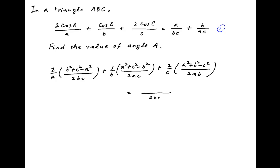On the right hand side, taking abc as the common denominator, the numerator is a² + b². Then abc cancels across the left hand side and the right hand side in the denominator.